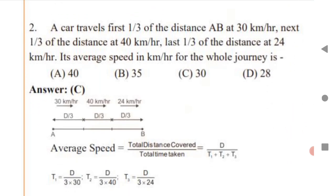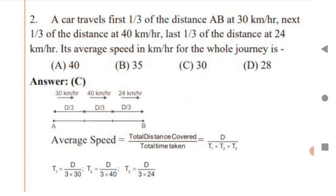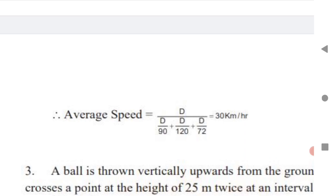Next question: a car travels one-third of the distance AB at 30 km/h, next one-third at 40 km/h, and last one-third at 24 km/h. Find average speed for the whole journey. Take total distance as D. Each third is D/3. Average speed = total distance / total time. T1 = (D/3)/30, T2 = (D/3)/40, T3 = (D/3)/24. Substitute in the formula of average speed; you will get the answer.